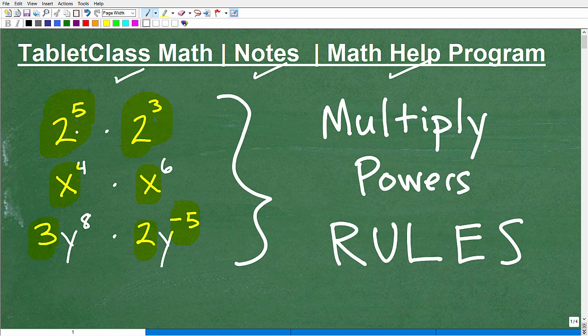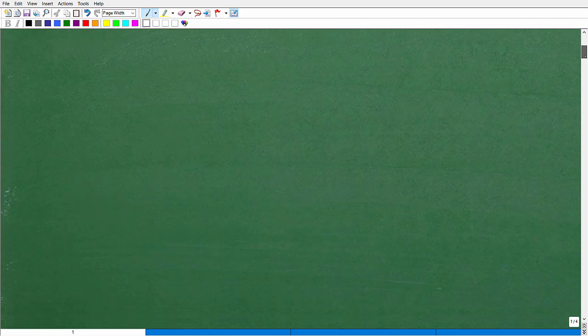All of these are referred to as powers. This is 2 to the 5th power, but the 2 part is called the base and the little tiny number up here is called the exponent. That's why we like to refer to these as the properties of exponents. So let's get to it.